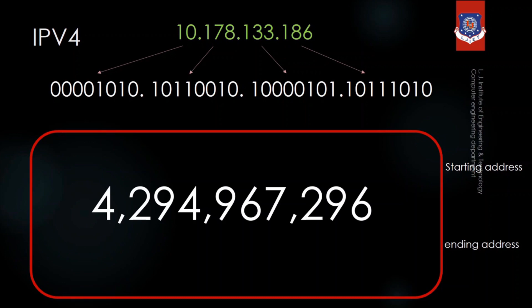As of 2020 there are 20 billion devices connected to the internet. If we were still using only IPv4 it would not be possible to connect that many devices. That is why IPv6 exists. However, the whole internet has not completely shifted to IPv6 — it is in process, as some devices still use IPv4 and some use IPv6, making it a mixture of both.